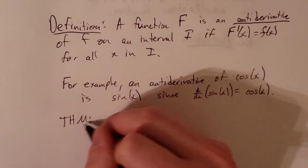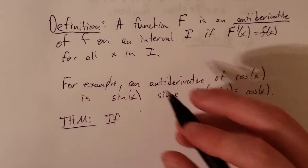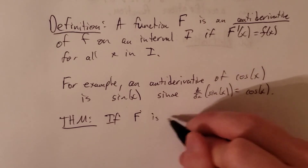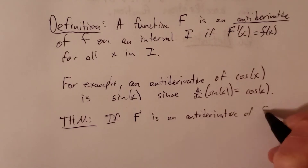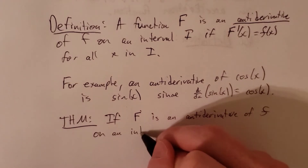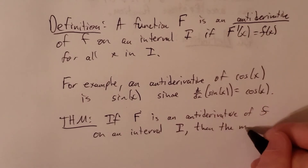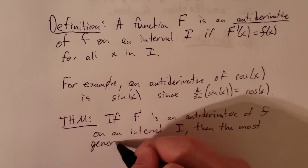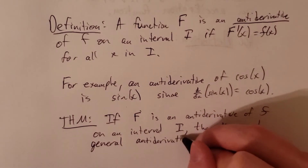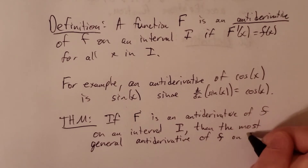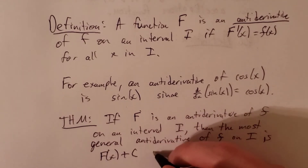Let's write a quick theorem related to that and see what that infinite family of antiderivatives is. If capital F is an antiderivative of some function lowercase f on an interval I, then the most general antiderivative of f on I is capital F of x plus some constant c.